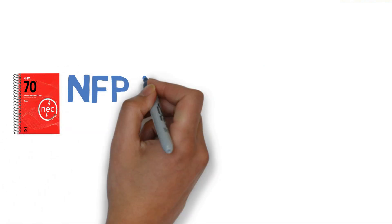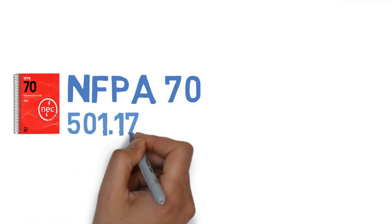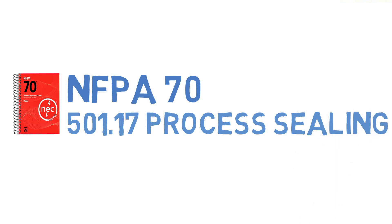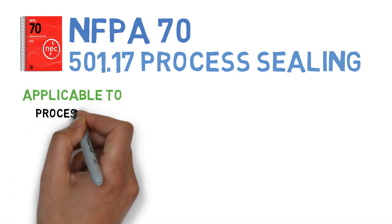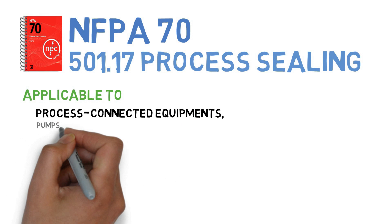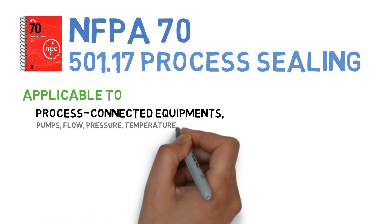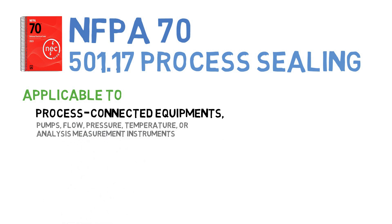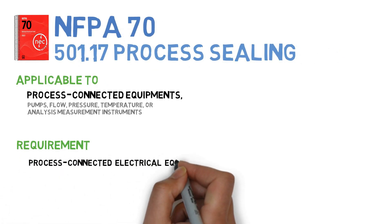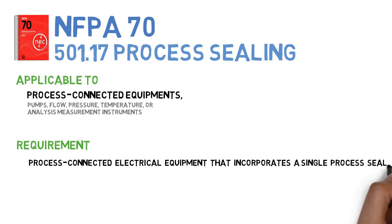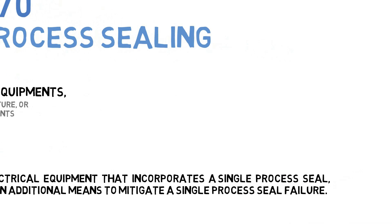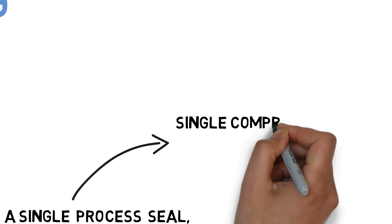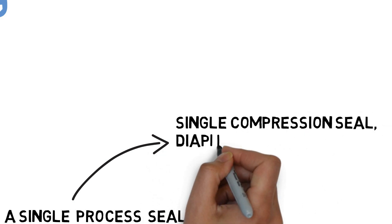NFPA 70 Article 501.17 covers process sealing requirements. This standard is applicable to process connected equipment such as pumps, flow, pressure, temperature, or analysis measurement instruments. Process connected electrical equipment that incorporates a single process seal shall be provided with an additional means to mitigate single process seal failure.